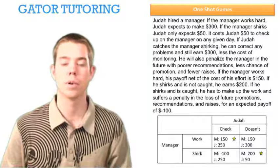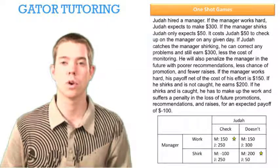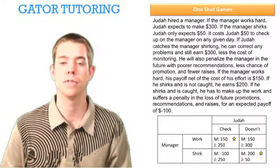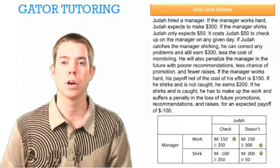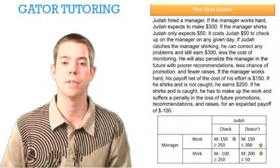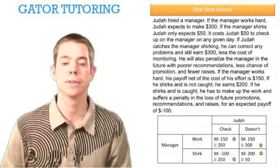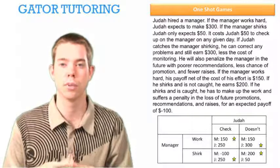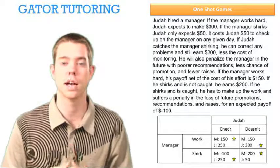Let's see what Judah will pick. We look at the manager's actions. If the manager is working, Judah is choosing between 250 or 300. He's choosing the 300. And if the manager is shirking, Judah is choosing between 250 and 50. He's choosing the 250. So we see that there is not two stars in one box. So there is no pure strategy Nash equilibrium.